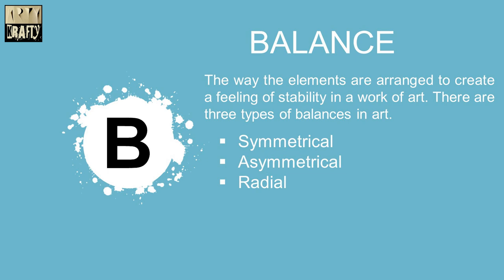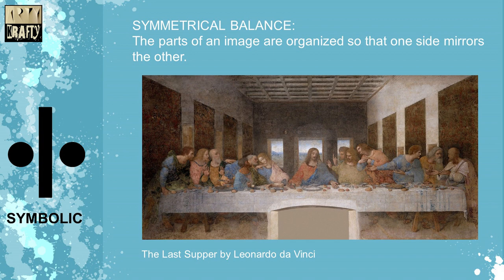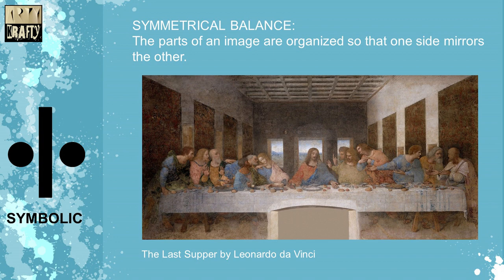Balance is the way the elements are arranged to create a feeling of stability in a work of art. There are three types: symmetrical, asymmetrical and radial. Symmetrical balance is when the parts of an image are organized so that one side mirrors the other. This is an example of symmetrical balance.